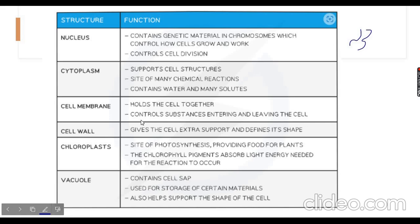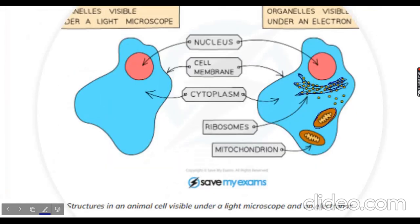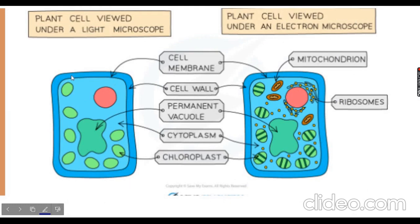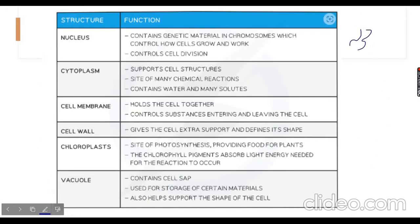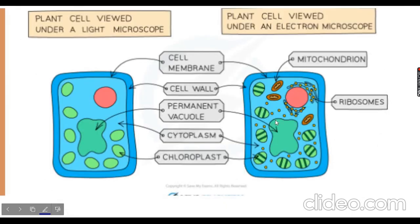The cell wall gives cells extra support and defines their shape. Animal cells have an irregular shape because they lack a cell wall, while plant cells have a regular rectangular shape due to the cell wall. Chloroplasts are the site of photosynthesis — the process of making food for the plant — and contain the chlorophyll pigment that absorbs the light energy needed for the photosynthesis reaction. The vacuole contains cell sap, which is used for storage of certain materials and helps support the shape of the cell.